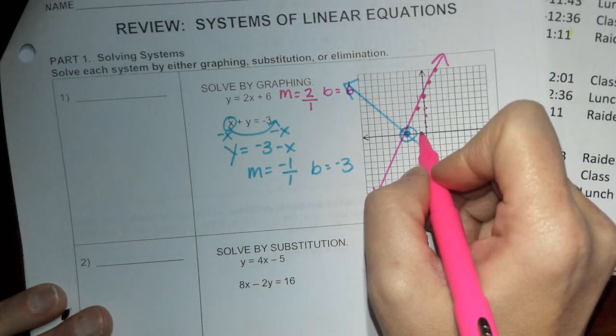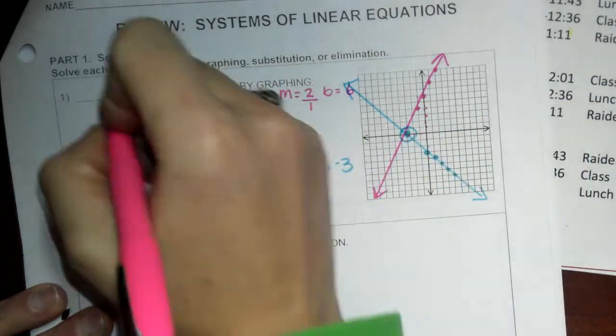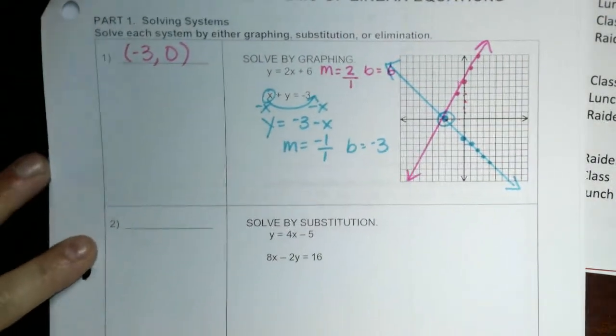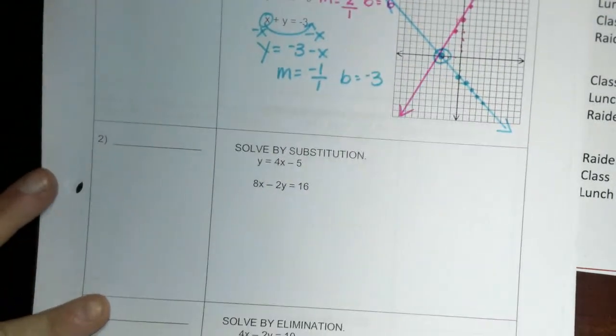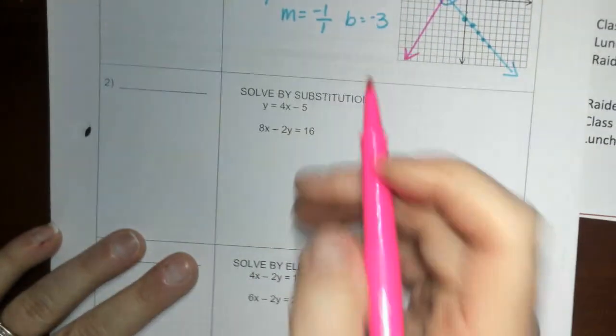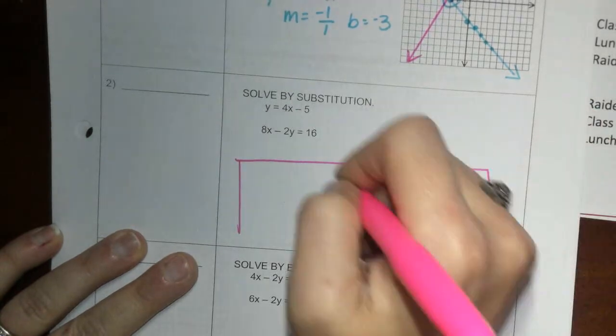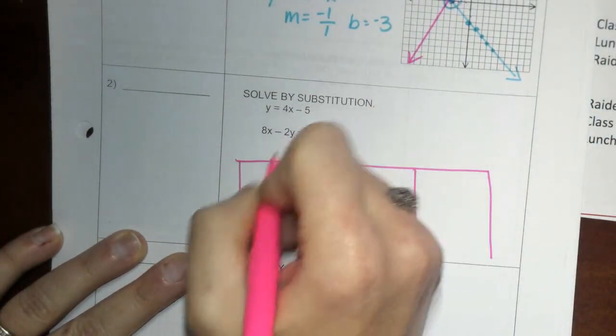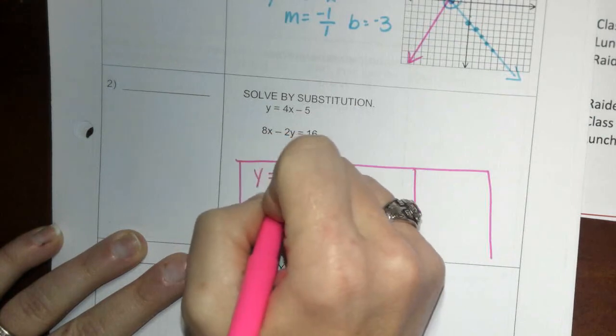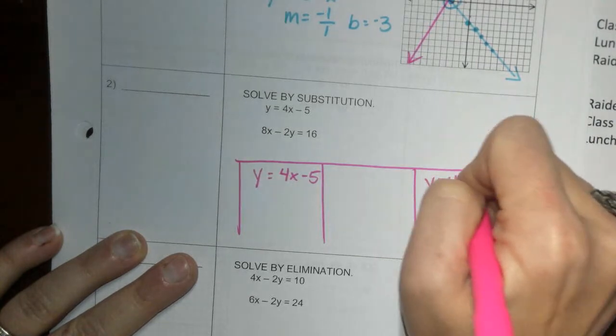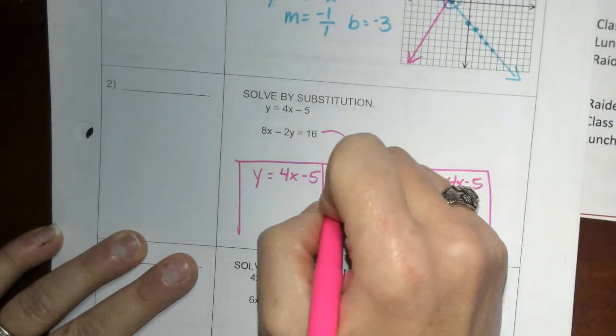And that point is negative 3, 0. Okay, so that's our solution. Okay, we're going to solve by substitution. Remember in substitution, this is where you draw the three boxes. We put the easiest one in the first and last box, which is here, y equals 4x minus 5.